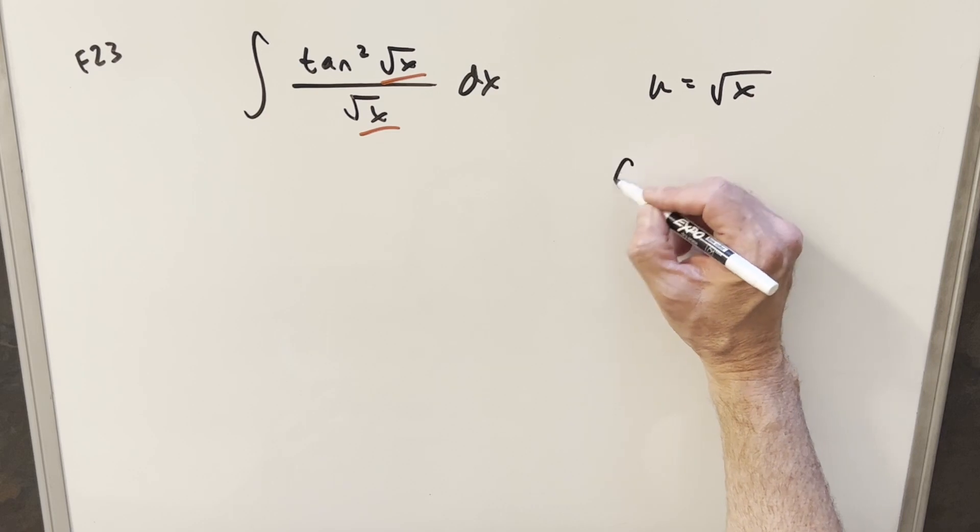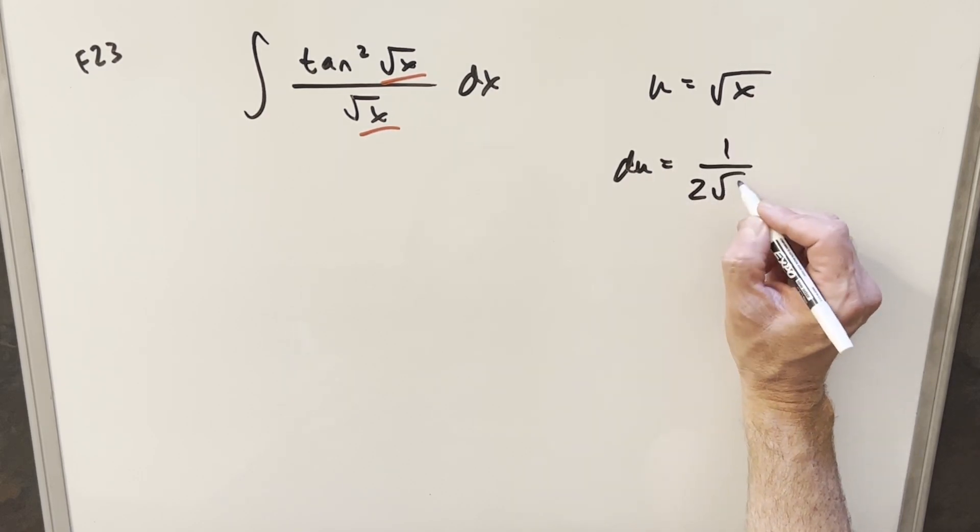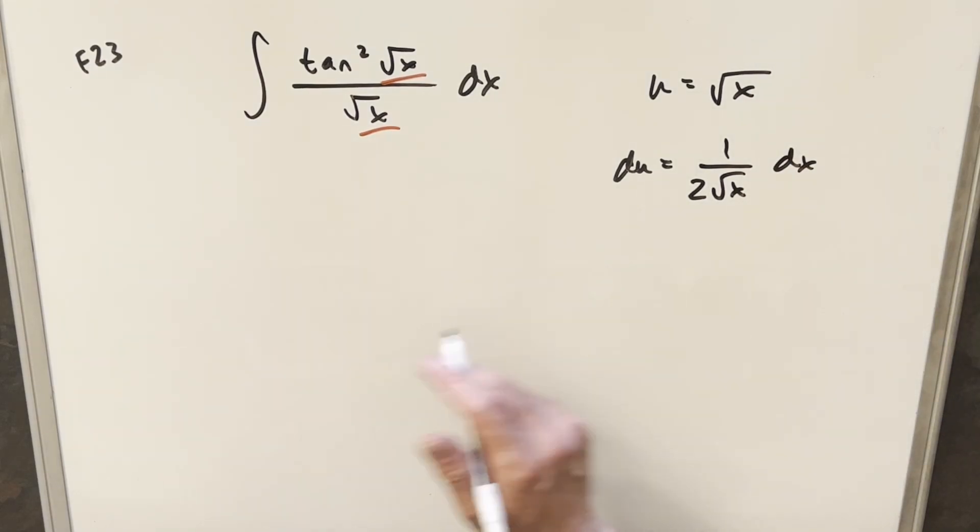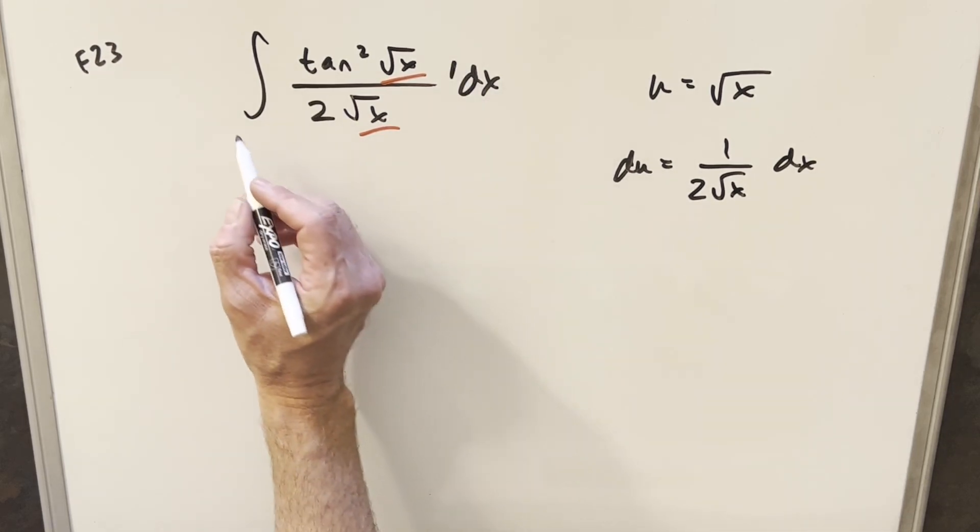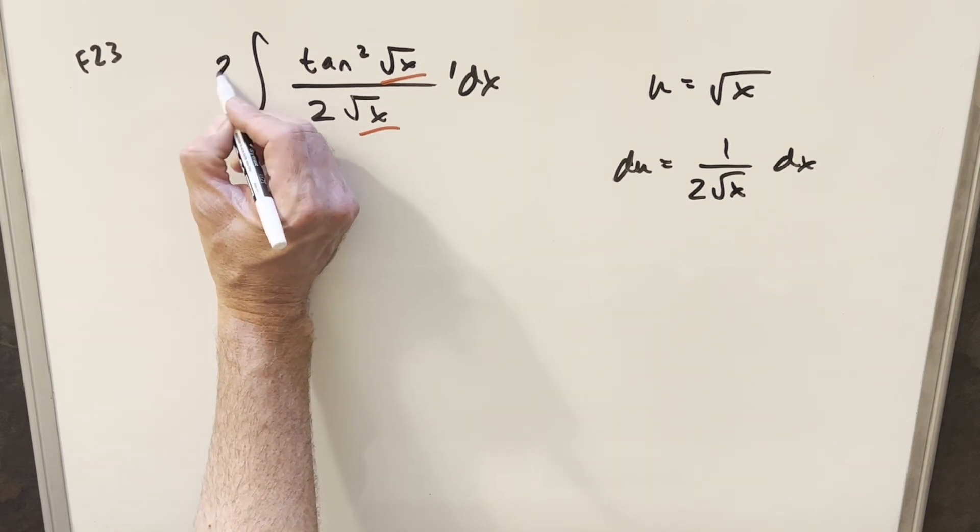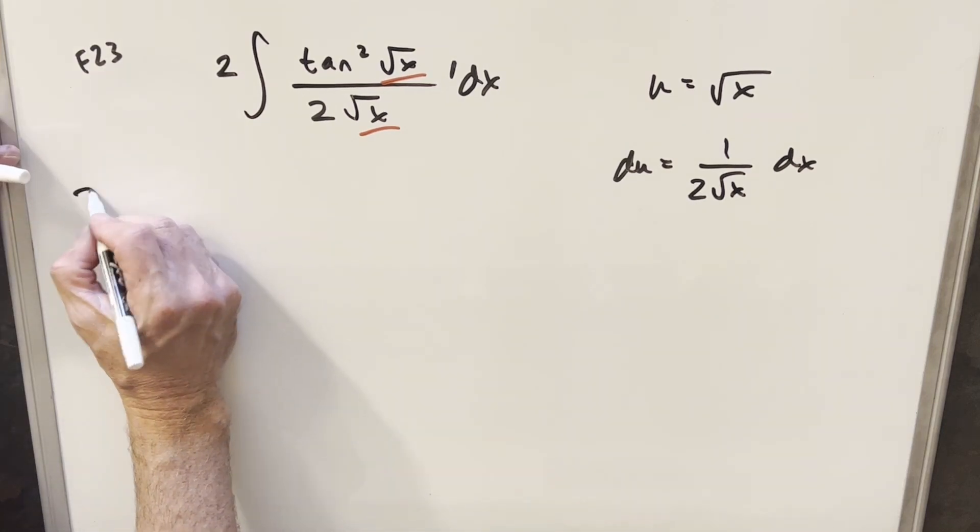And then from here, if I take the derivative, the derivative of square root of x is just 1 over 2 square root x dx. And it's pretty nice because we have the square root x in the denominator here. So what I can do to make it look like this, if I just multiply by 2 here, we have a 1 right here. And then what I can do, if I multiply by 2 in the denominator, I can just multiply by a 2 in the numerator so that I'm not changing it.